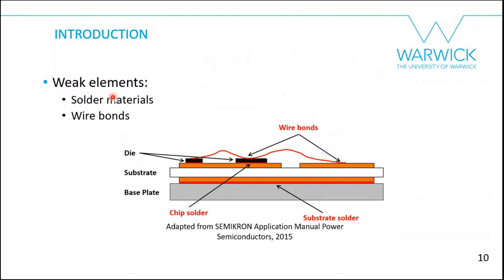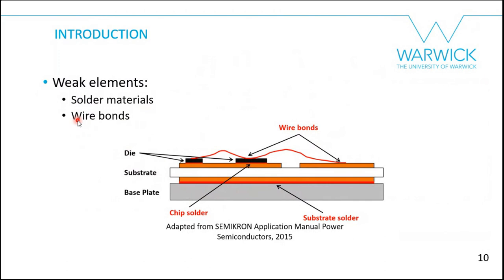Different studies have identified the weak elements of this packaging, which are mainly the solder materials and the wire bonds. Wire bonds interconnect chips and connect chips to copper areas on the substrate. Solder attaches the chips to the copper, and also attaches the DBC substrate to the base plate. These are the weak elements of the packaging system.